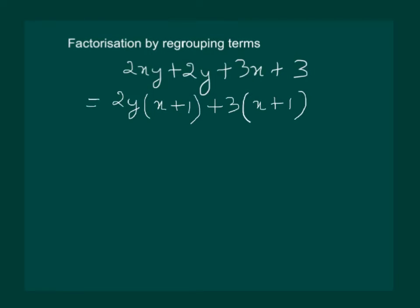Here we can observe that x plus 1 is common in both the terms. So, let us take out x plus 1 common, and in the bracket it remains 2y plus 3.